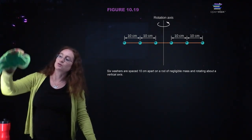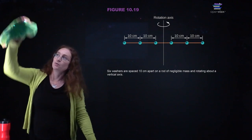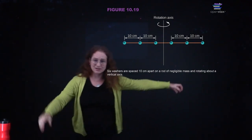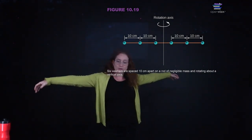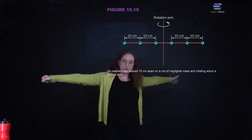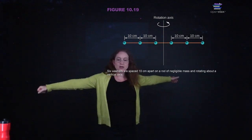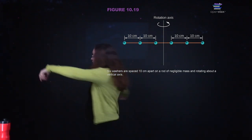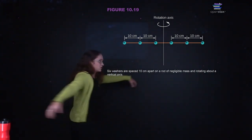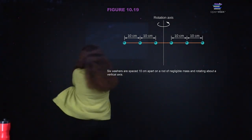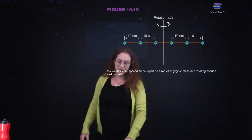So it's harder to turn something when its mass is toward the outside. This is why, if you do turns when you're skating: if you have your arms out, it's harder to get turning, and then as you pull your arms in, you actually speed up.